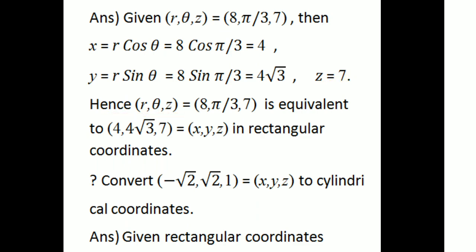Hence, the cylindrical coordinates (8, 5π/3, 7) are equivalent to the rectangular coordinates (4, 4√3, 7) in the Cartesian system.